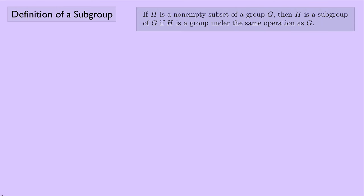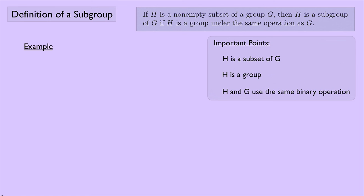Here is the definition of a subgroup and the three important points. In our example, G is the set of integers under addition. This bracket notation — with the set as the first element and the binary operation as the second — is a way of specifying a group when we have a set together with a binary operation. We don't always need to use it, but sometimes it's convenient.